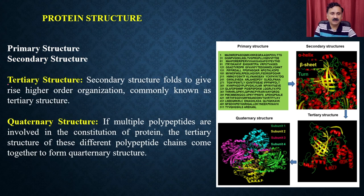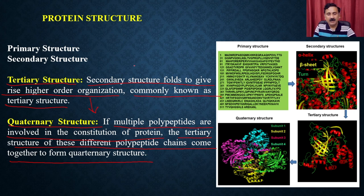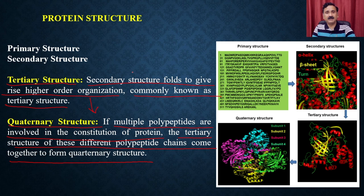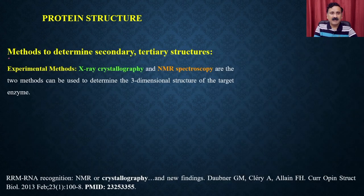Secondary structures fold to give rise to higher-order organizations commonly known as tertiary structures. Tertiary structures can still be packed together, giving the quaternary structure. If multiple polypeptides are involved in the constitution of a protein, the tertiary structures of these different polypeptide chains come together to form the quaternary structure.